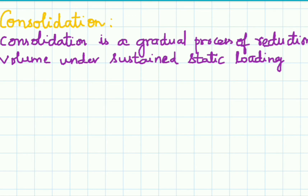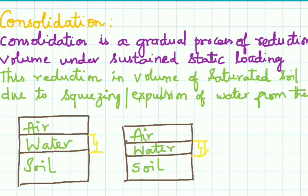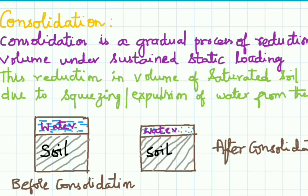Before going into the derivation, we have to know what consolidation is. Consolidation is a gradual process where the volume of soil is reduced due to sustained static loading. This reduction in volume of saturated soil is only due to squeezing or expulsion of water from the soil. As observed in the pictures before and after consolidation, the change in volume of water causes the entire volume of soil to be reduced. This procedure is consolidation.